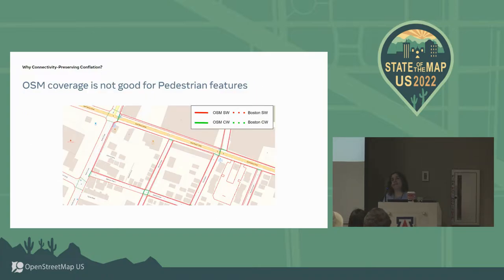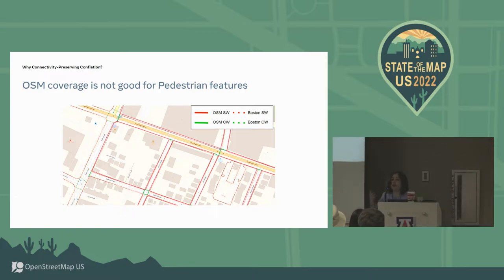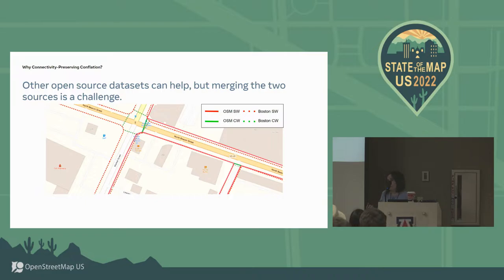When showcasing the merits of such an approach, we landed on a pedestrian map feature — footways in OSM — because it's not very well mapped in OSM. For pedestrian routing use cases, you need to make sure the footway coverage in a certain area is good. The good part is that city GIS departments provide open-source datasets that complement existing OSM coverage.